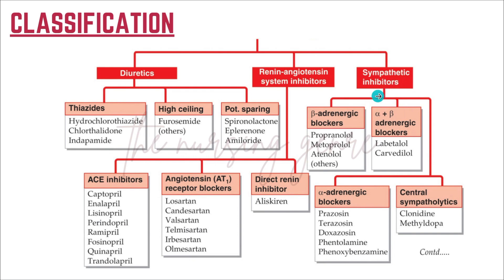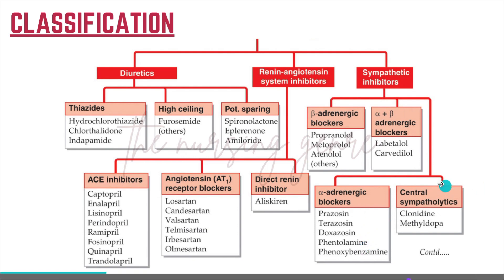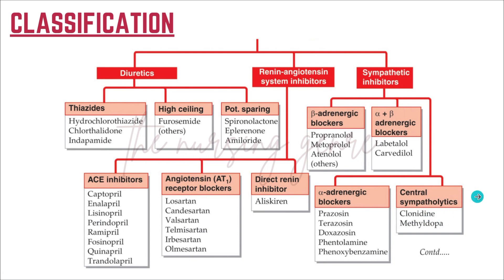Sympathetic inhibitors include beta-adrenergic blockers and alpha-plus-beta-adrenergic blockers. Beta blockers: propranolol, metoprolol, atenolol. Alpha-adrenergic blockers: prazosin, terazosin, doxazosin. Central sympathetic agents are also included.